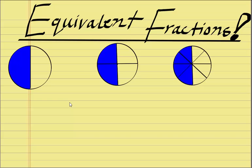Say, for example, down here, I've got these three diagrams. We've got 1 on 2, 2 on 4, and 4 on 8.